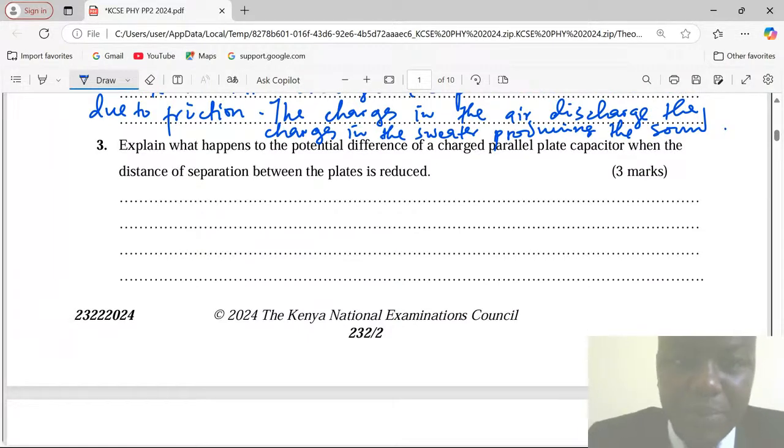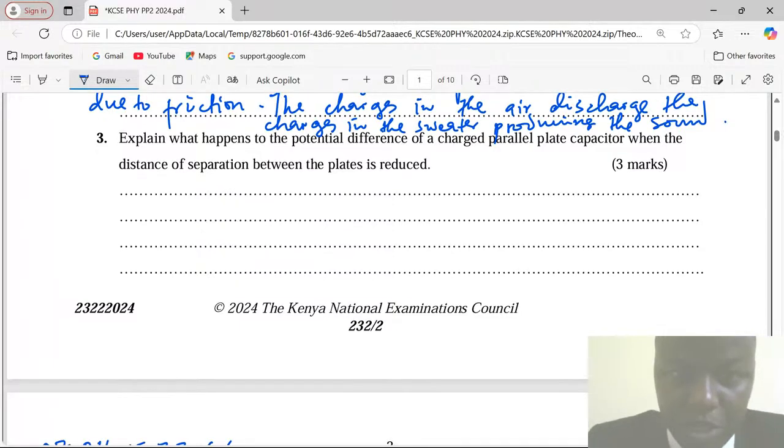Explain what happens to the potential difference of a charged parallel plate capacitor when the distance of separation between the plates is reduced. So we usually say that the potential difference decreases.